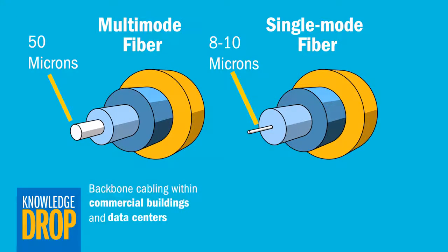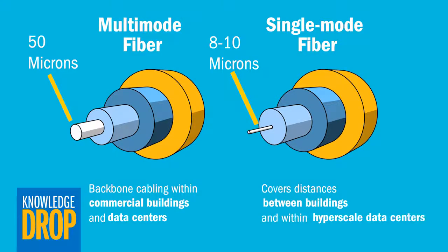Multimode fiber typically serves as a cabling backbone in commercial buildings and data centers, connecting the aggregation network layer to the core and access layers. Single-mode fiber is ideal for covering long distances on the order of kilometers between buildings or within the backbone of hyperscale data center environments.